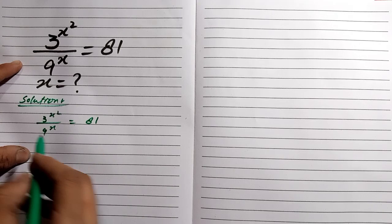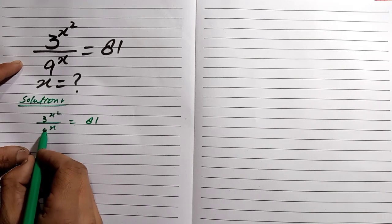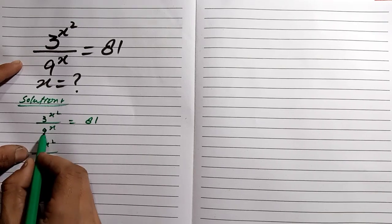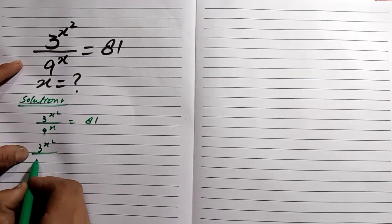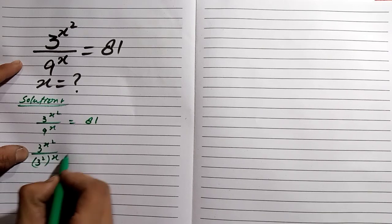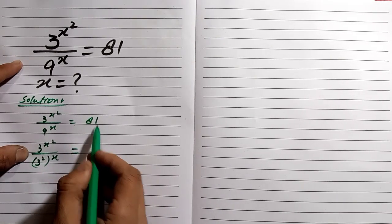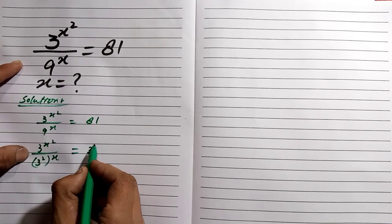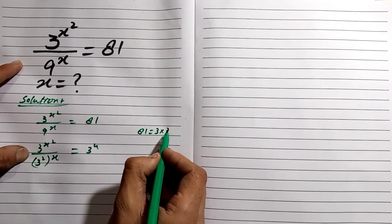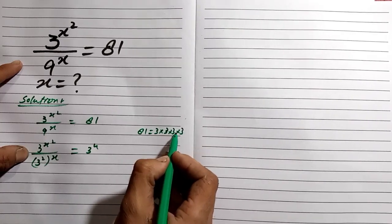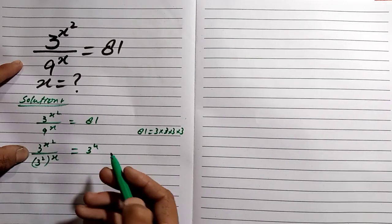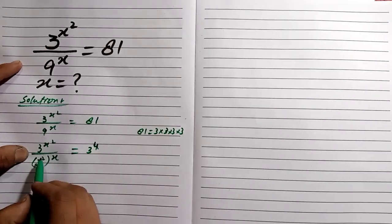We can write 9 in their factor form which is 3 to the power 2, and 81 we can write as 3 to the power 4, since 81 equals 3 multiply 3 multiply 3 multiply 3, so 81 equals 3 to the power 4.